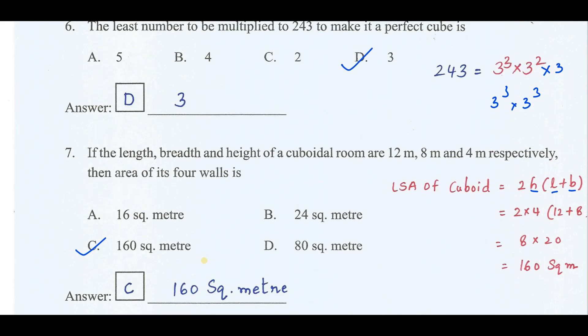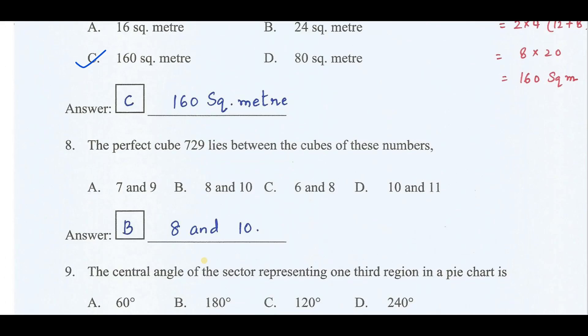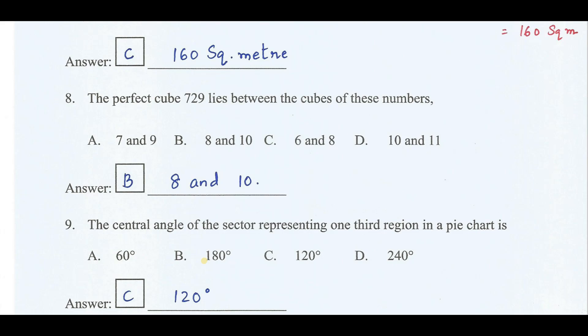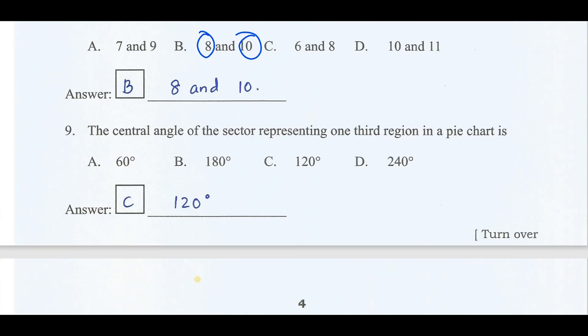Dear students, do subscribe to the channel and also do join the telegram group which is provided in the description. The perfect cube 729 lies between the cubes of these numbers: 9 cube is 729. Therefore it lies between 8 cube and 10 cube. The correct answer is option B. The central angle of the sector representing 1/3rd of the region in a pie chart: the total angle is 360. 1/3 of 360 is 120 degree. Therefore the correct answer is option C.